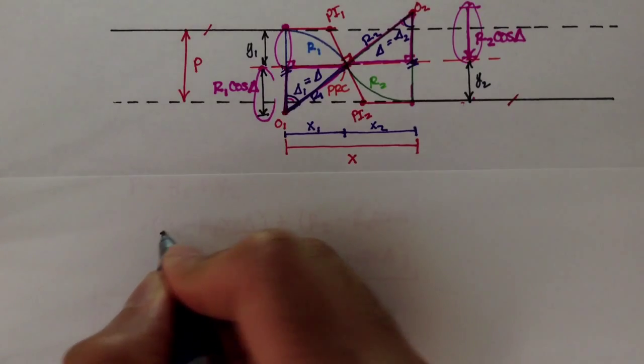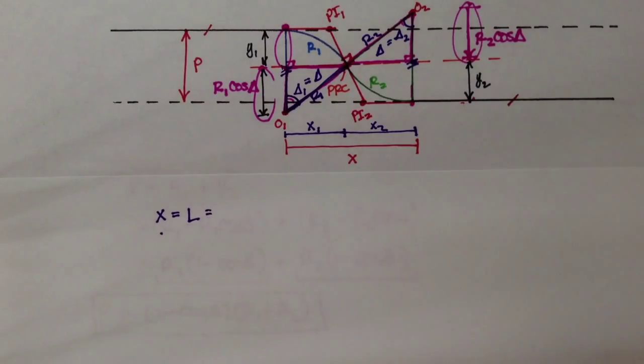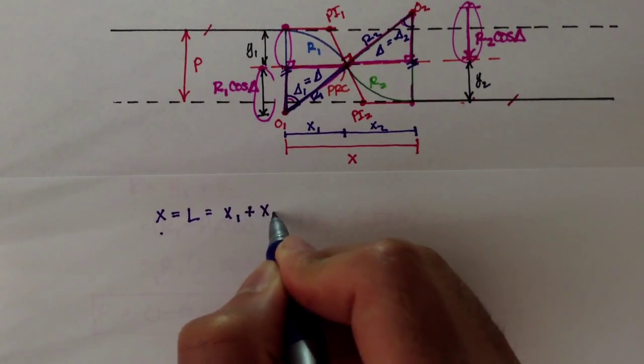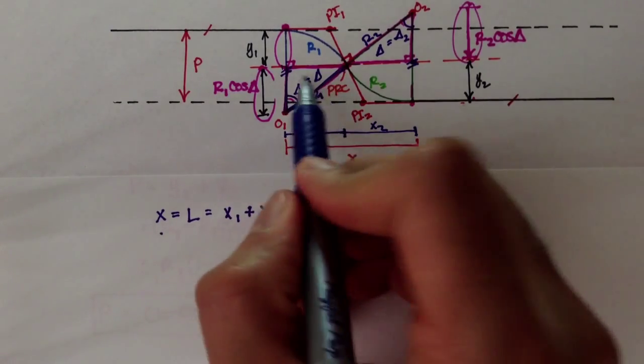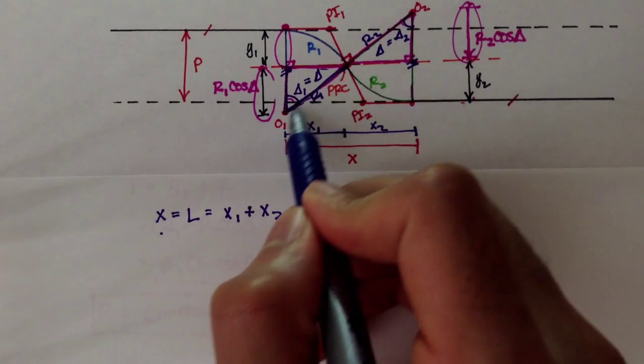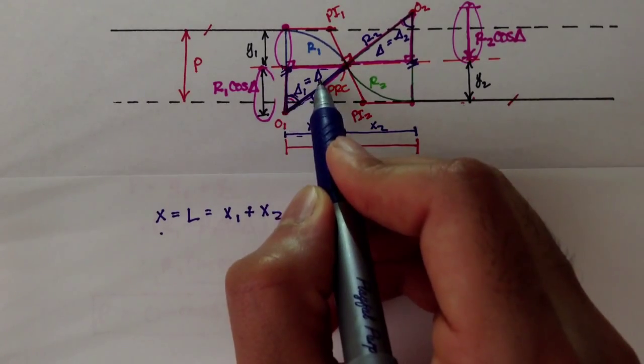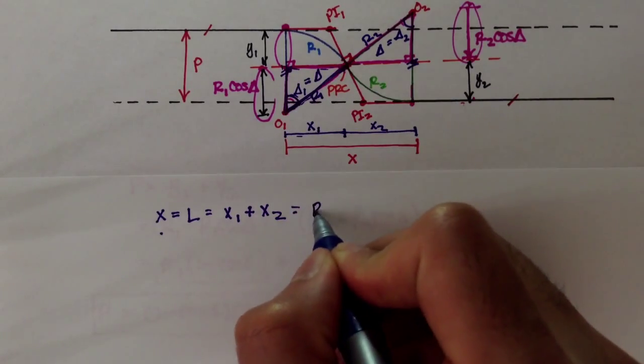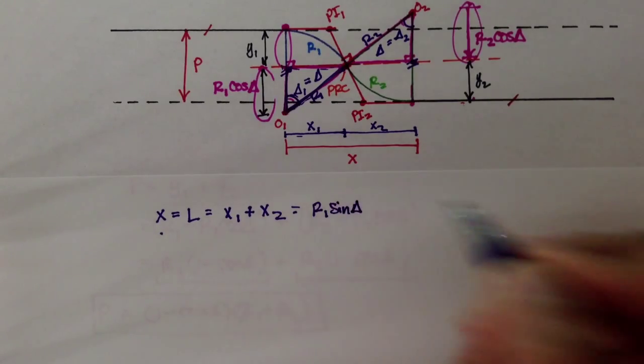So, X, or X, which is the transition length, sometimes it's denoted L, is the sum of X1 plus X2, right? And, X1, which is this distance here, well, if this is radius 1, and this is an interior angle, the delta, this distance here would be R1 sine of delta, right?